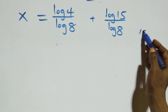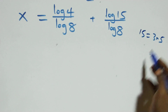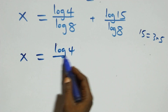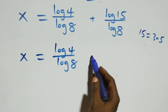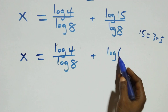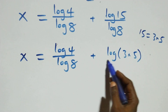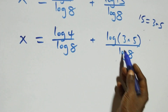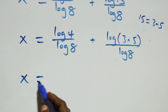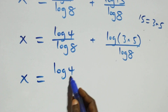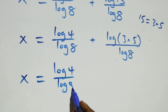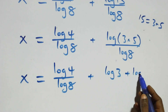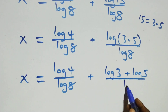Next, 15 can be written as 3 times 5, so log 15 becomes log 3 plus log 5. We then apply the log law again, giving x equals log 4 over log 8 plus log 3 plus log 5 over log 8.